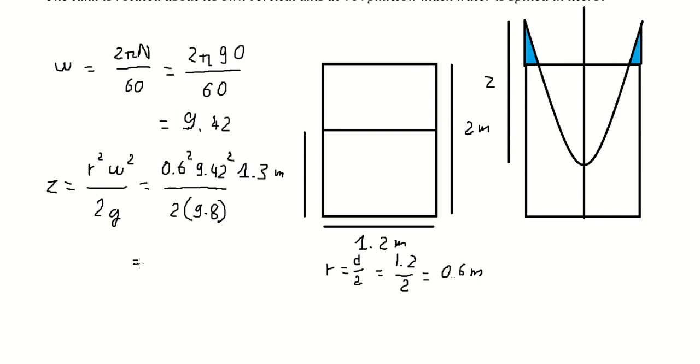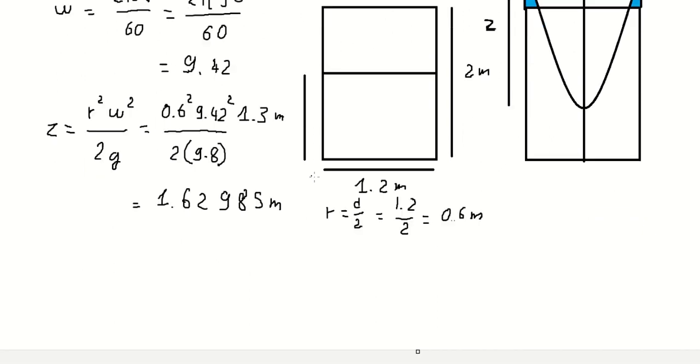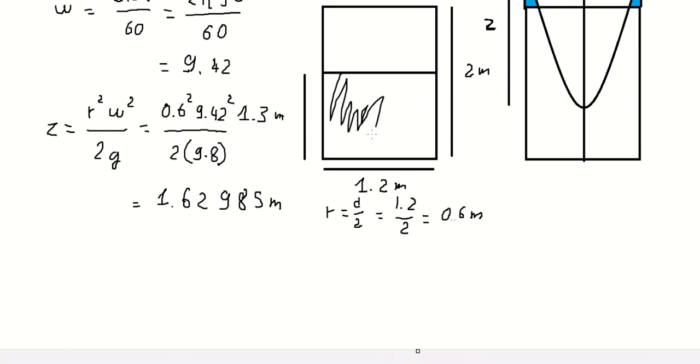And we have 1.62985 meters here, so this is the value of z we need to find. So we need to find the volume of the water in here before we rotate, so that is about this one.